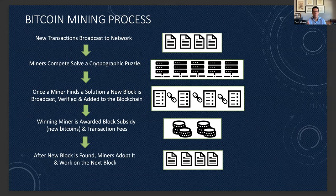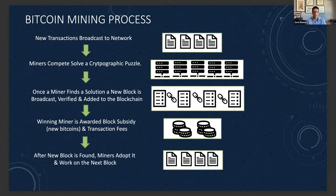Here's a quick summary of the process of Bitcoin mining. Every 10 minutes, new transactions are broadcast to the Bitcoin mining network, and miners are competing to solve that very complex cryptographic puzzle. Once a miner finds a solution, a new block is broadcast, verified, and added to the blockchain, and the winning miner is awarded their block subsidy — the new Bitcoin — and their transaction fees. After the new block is found, miners adopt it and work on the next batch of transactions.